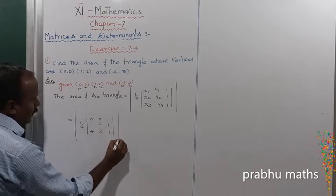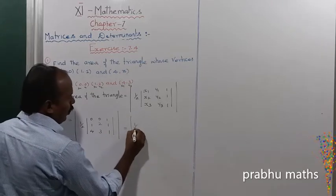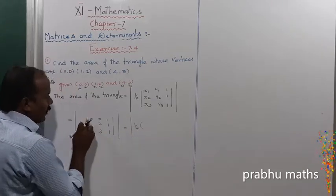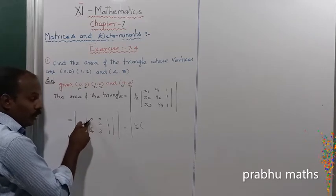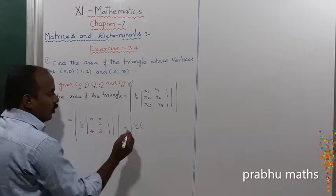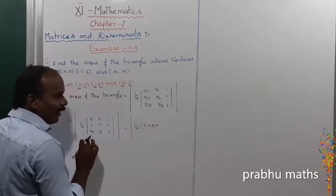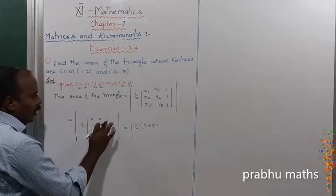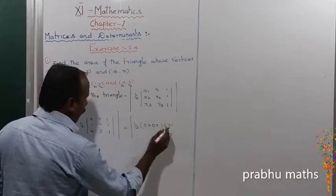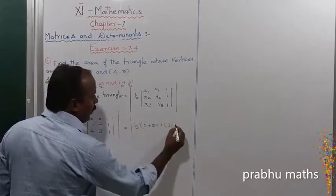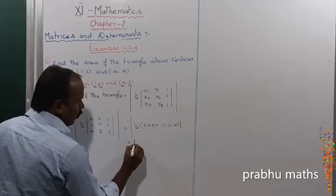That equals modulus of 1/2 times the determinant value. The first element A11 is 0, so its minor is also 0. Expanding along row R1: 0 plus 1 times (3 minus 8). So 3 minus 8 equals the determinant.